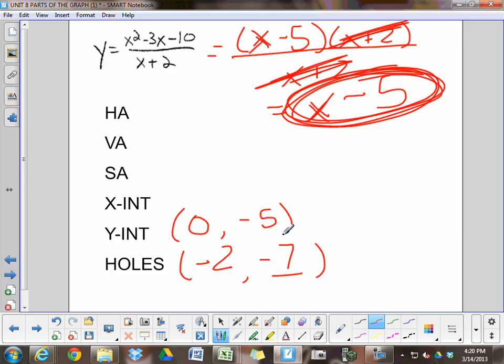Here, the x-intercept now. You want to think about in the remaining function, what would I plug in to produce 0? And that's 5.